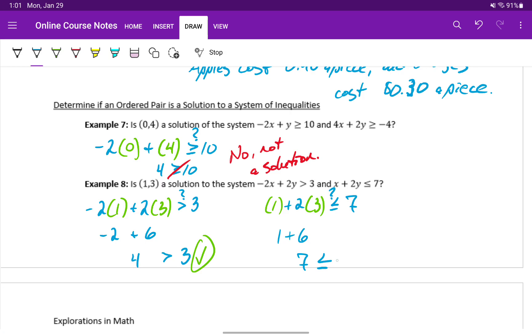In this case, since we have that or equal to, 7 is less than or equal to 7. So that checks out, meaning that yes, 1 comma 3 is a solution to this system of inequalities.